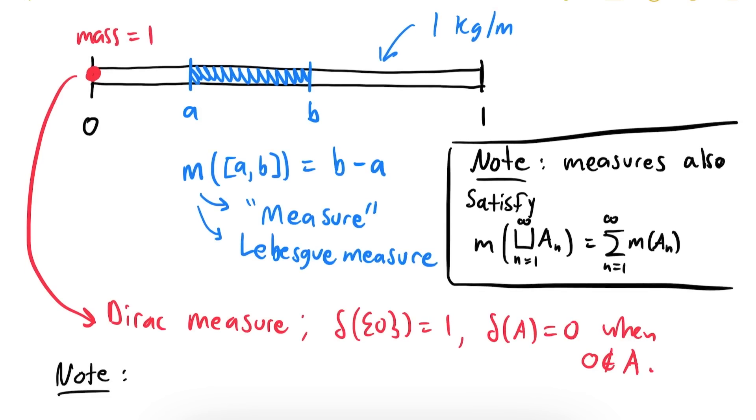If you interpret this in terms of densities, the Dirac measure assigns an infinite density to the point 0, since you're stuffing an entire kilogram into a single point. As you might have guessed, the Dirac measure is very closely related to the Dirac delta, and as we'll see later, this property is actually why the Dirac delta is often thought of as being infinite at 0 and 0 elsewhere.